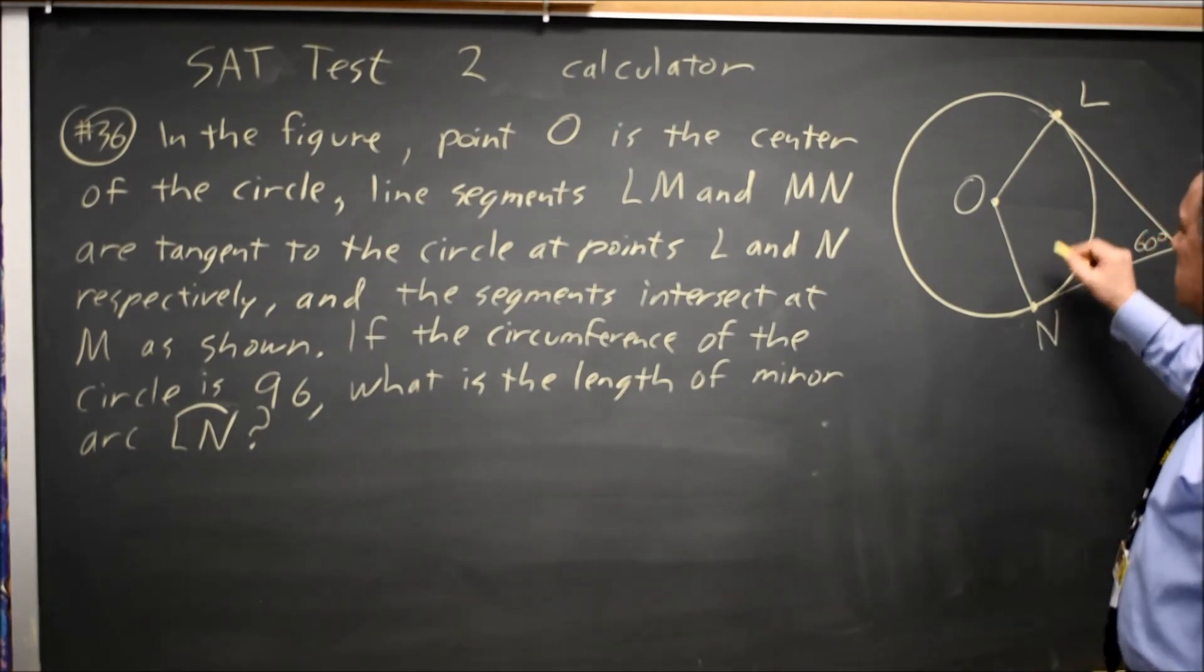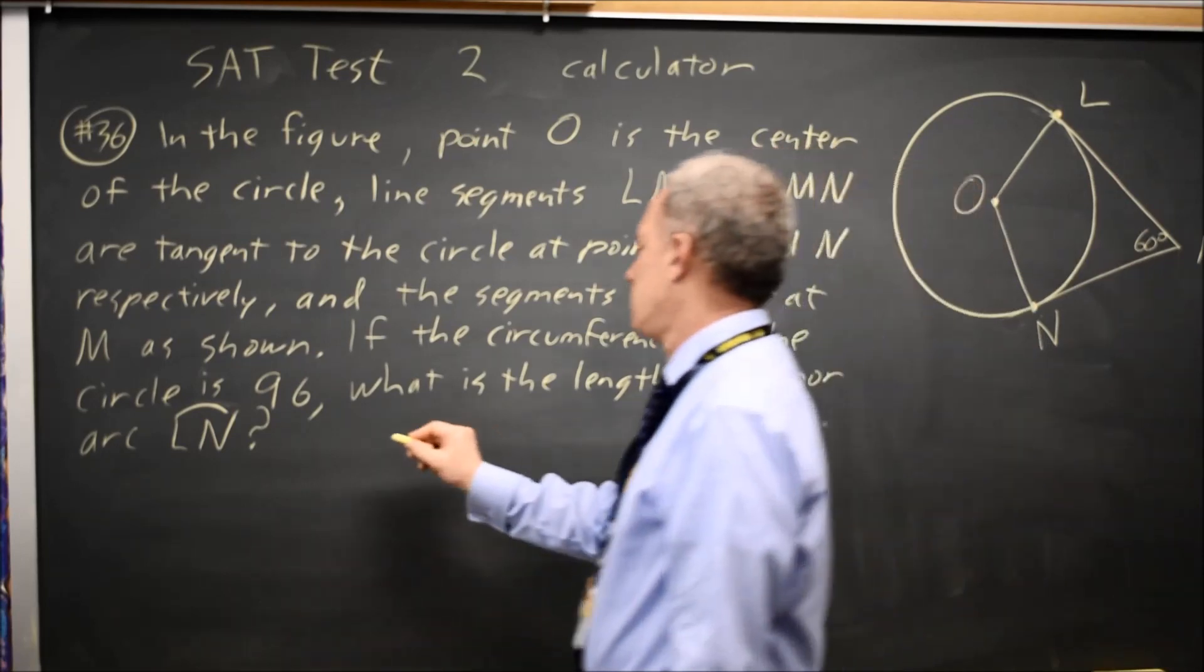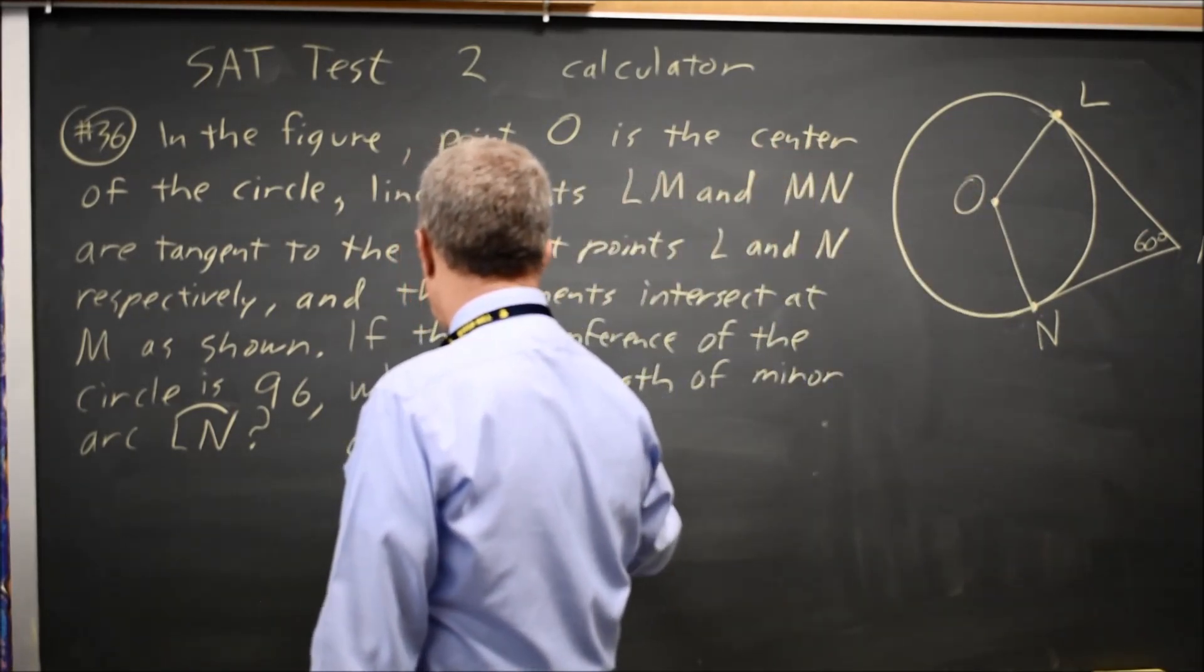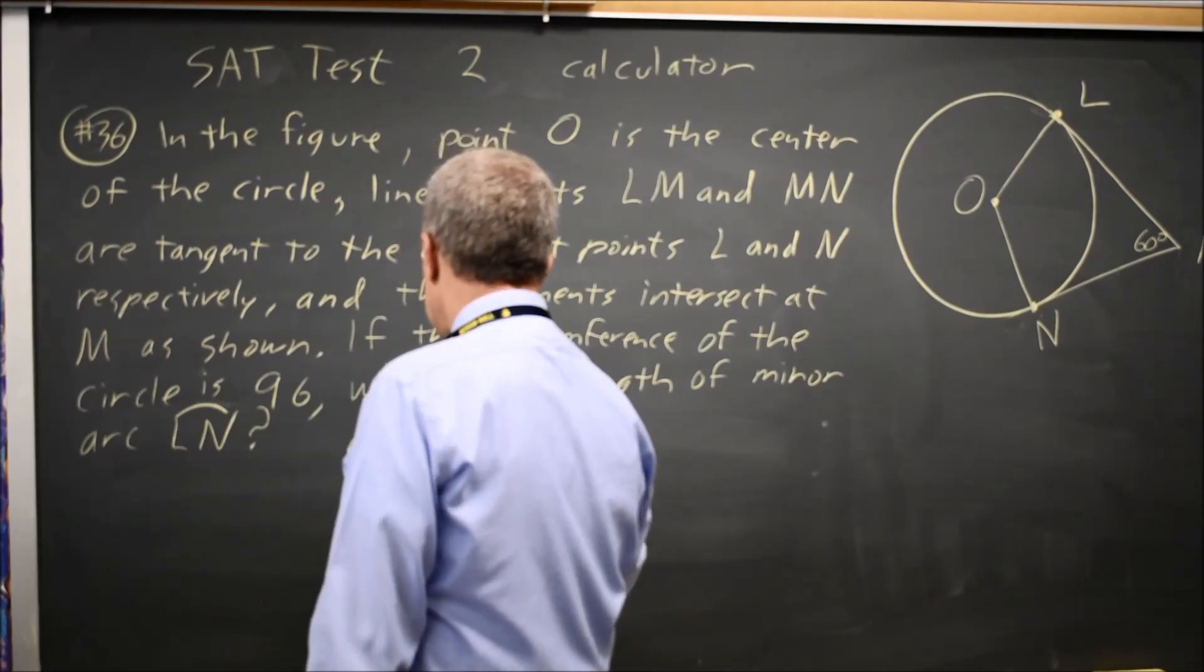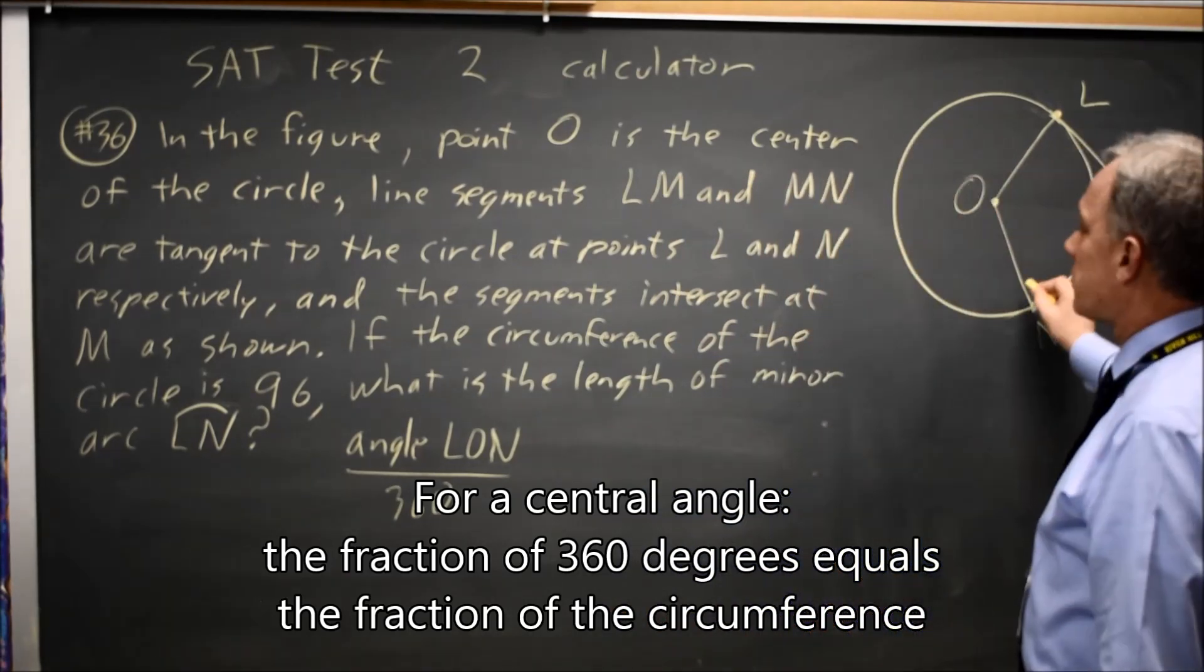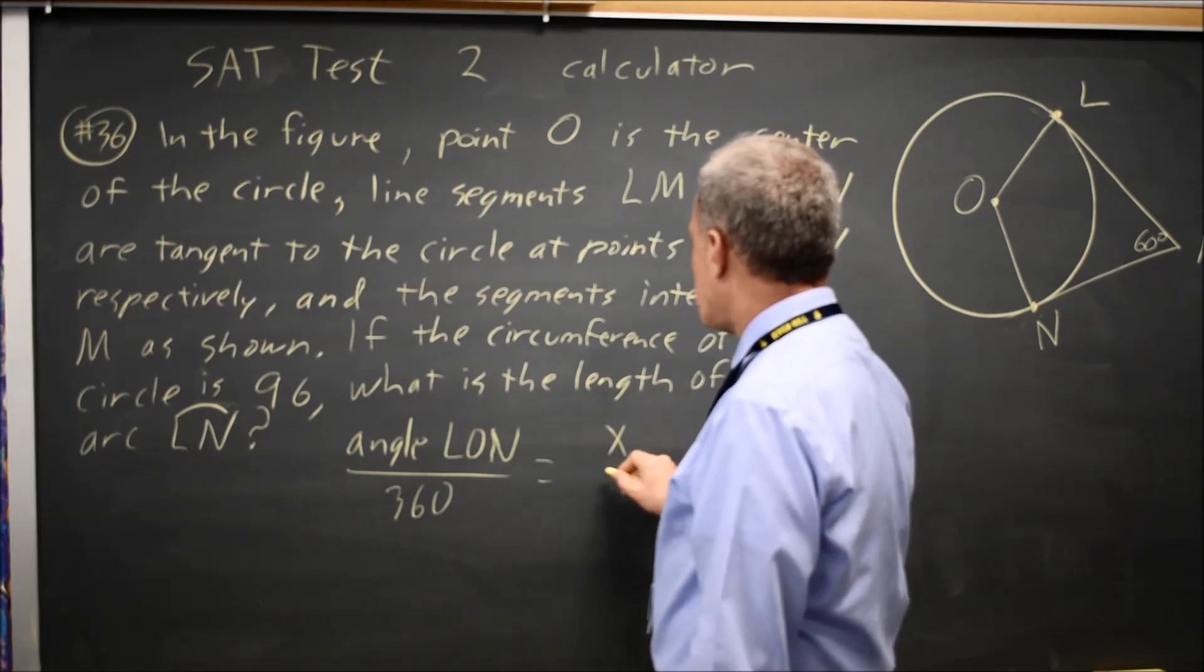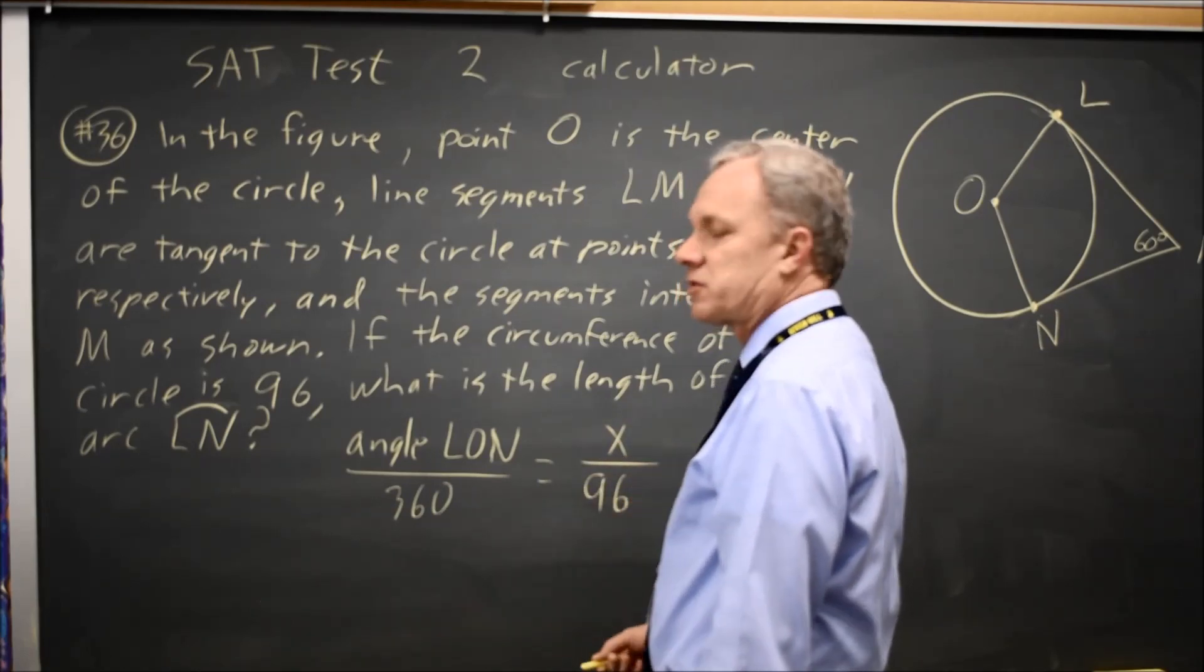if I can find angle LON in degrees, that over 360 is the fraction of the circle taken up by this arc. And that should equal the length we're looking for over the entire circumference of 96 of the circle.